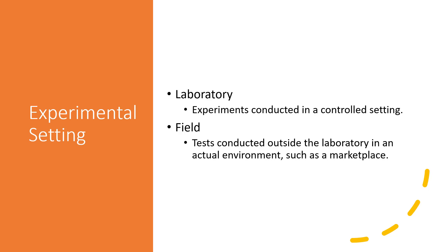On the other hand, field experiments are conducted outside the laboratory, usually in an actual environment such as a marketplace. Because they are conducted in the actual environment, we tend to have more confidence in their results in terms of generalizability — we think it's more real, and that's why field experiments have higher external validity. However, because field experiments are conducted outside the laboratory, many variables are left out of control, so our ability to eliminate other possible factors is reduced. That's why field experiments have lower internal validity.